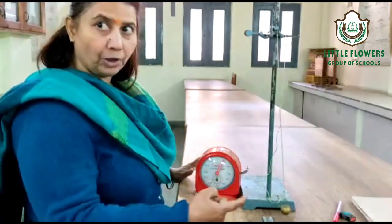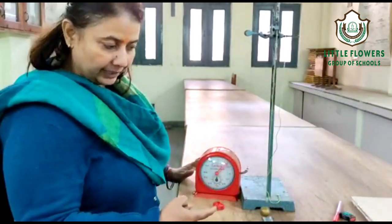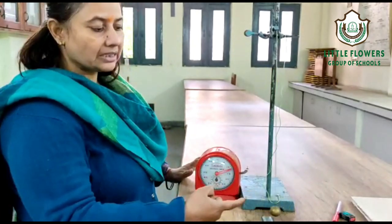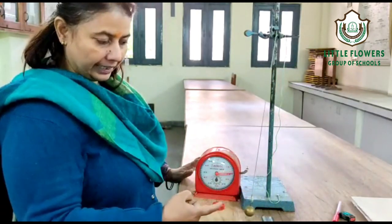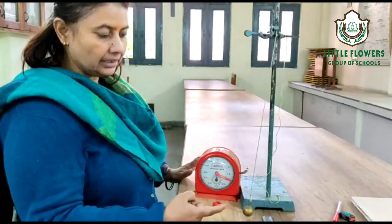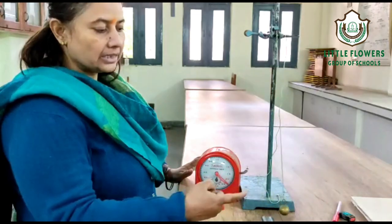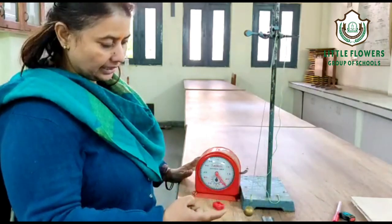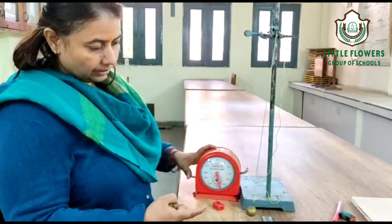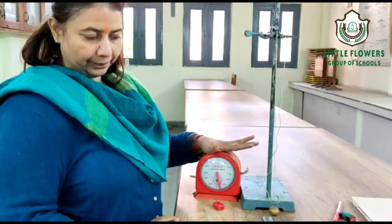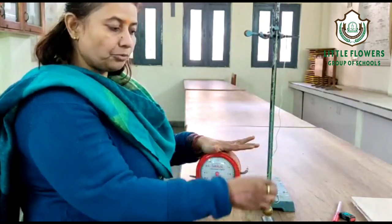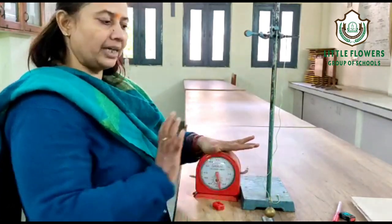We count the oscillations: 1, 2, 3, 4, 5, 6, 7, 8, 9, 10, 11, 12, 13, 14, 15, 16, 17, 18, 19, 20. We close the watch and note the time period. Repeat the same procedure for the same length to take the mean value and avoid any type of error.